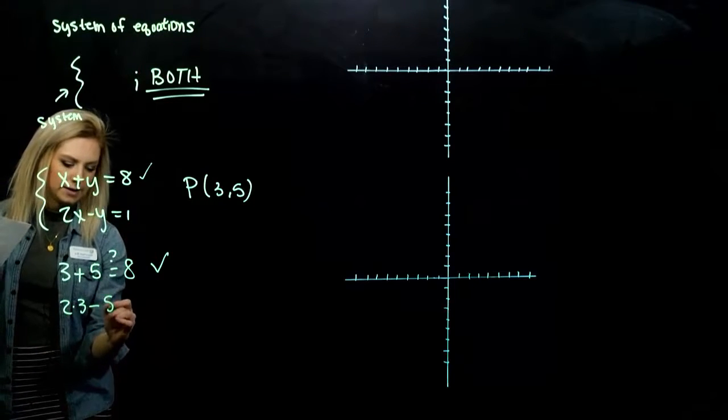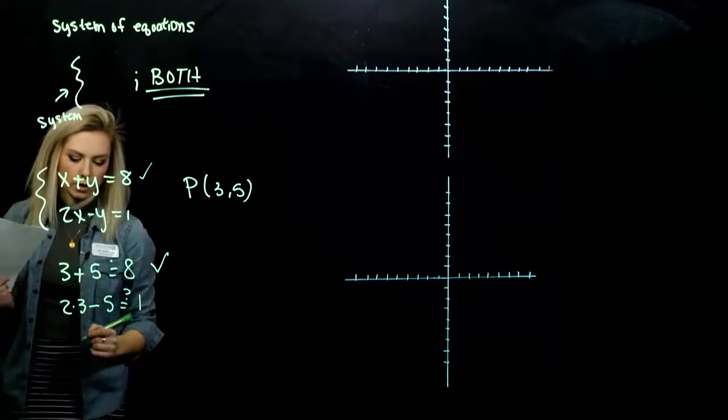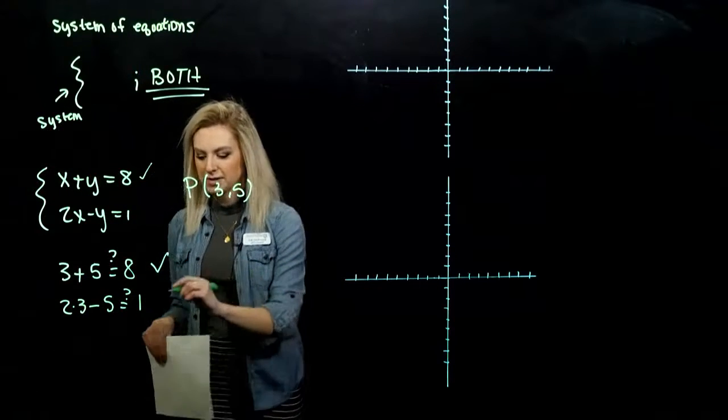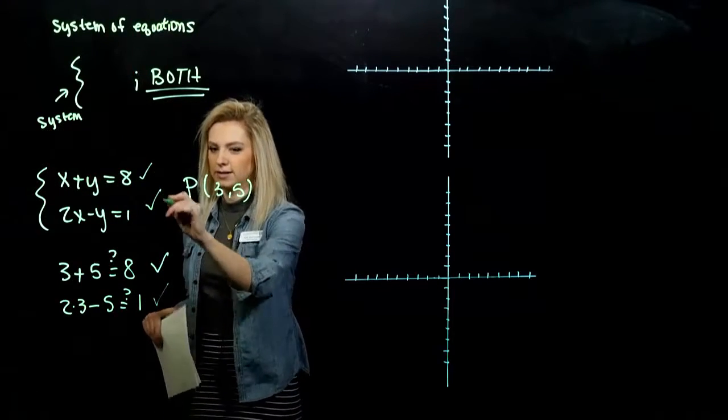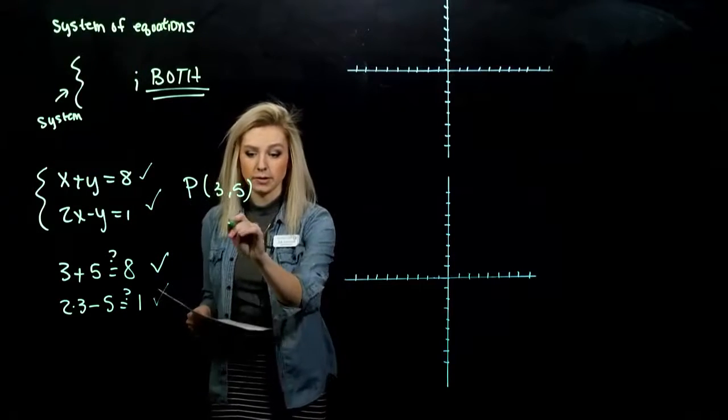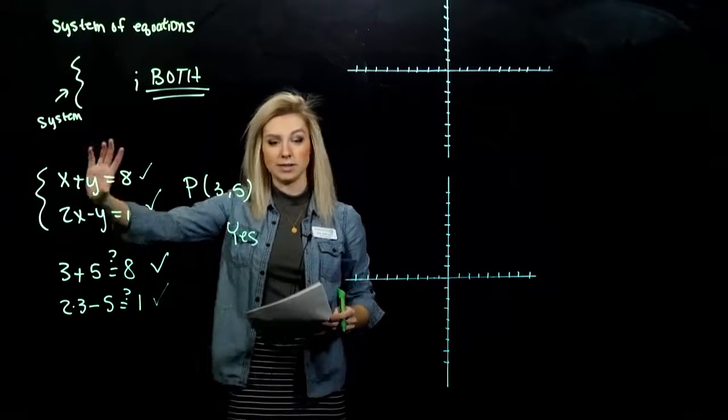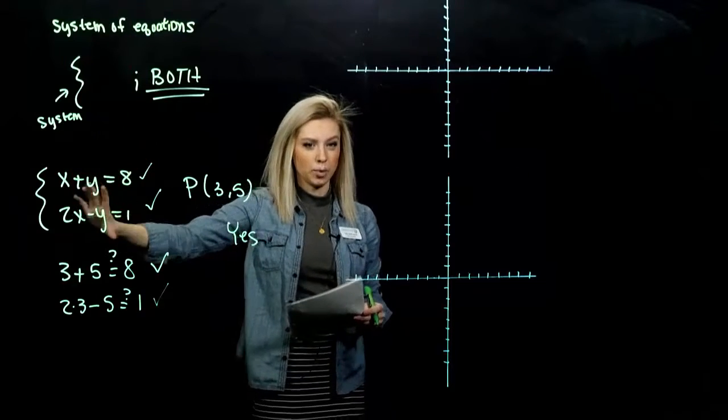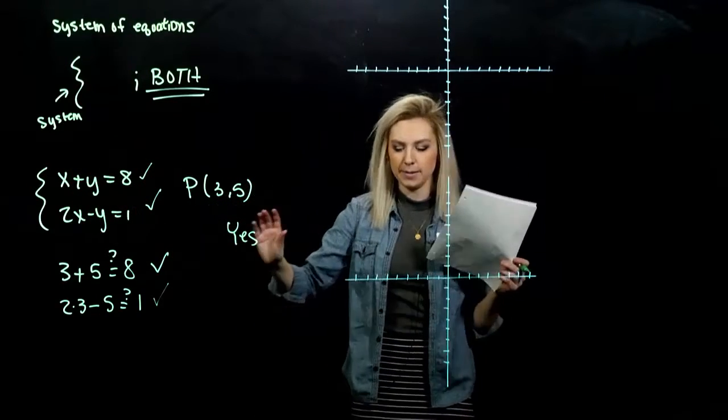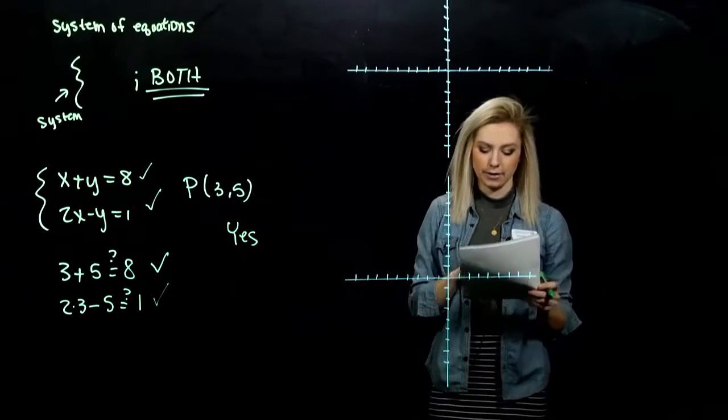So it doesn't matter which one we start with in the system. P has to satisfy both of these at the exact same time. So P is (3,5). We want to prove that this is actually a solution to the system. So let's plug it into the first: 3 plus 5, is that really equal to 8? Yes. First one is satisfied. And for the second, 2 times 3 minus 5, is that really equal to 1? So I've got 6 minus 5, yes, and that one is satisfied as well.